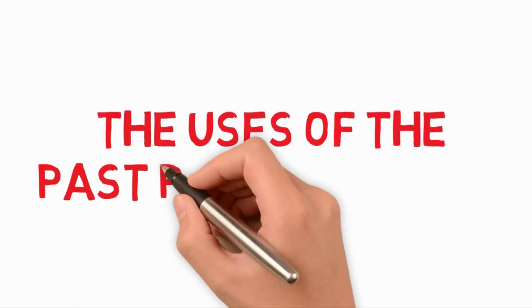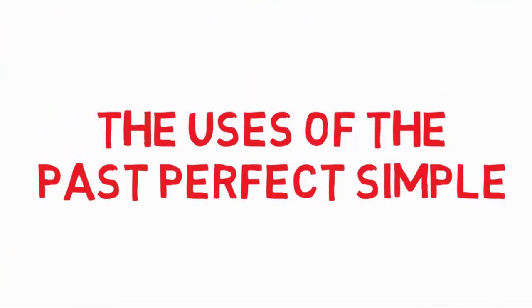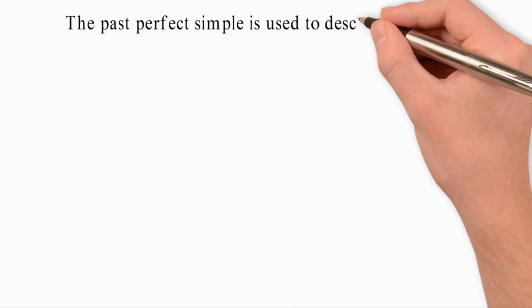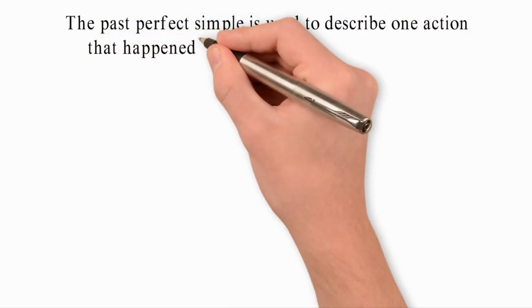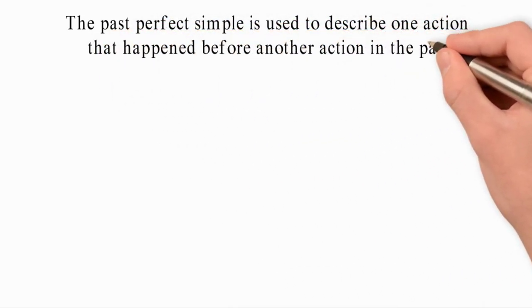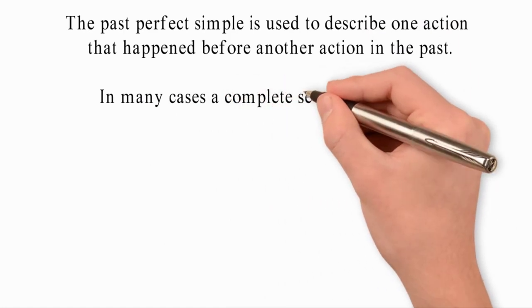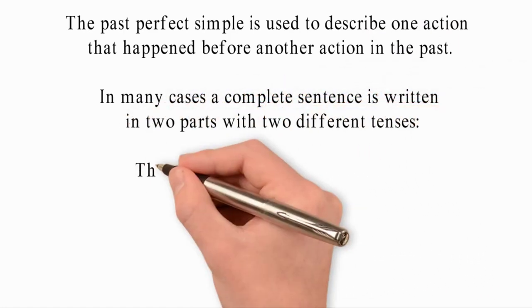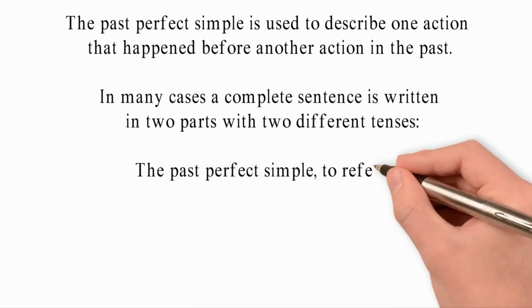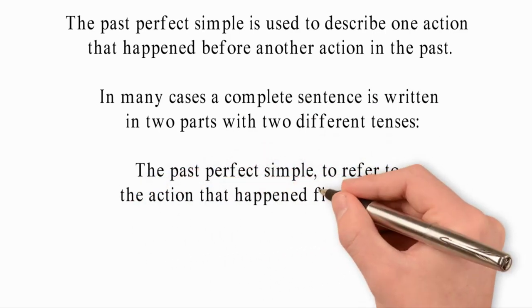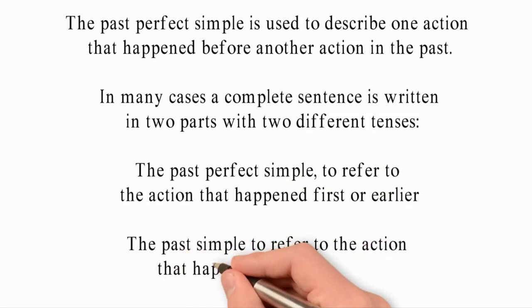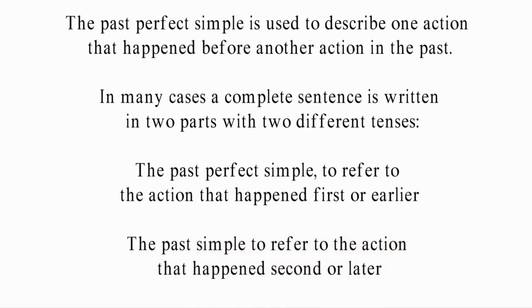The uses of the past perfect simple. The past perfect simple is used to describe one action that happened before another action in the past. In many cases, a complete sentence is written in two parts with two different tenses: the past perfect simple to refer to the action that happened first or earlier, and the simple past to refer to the action that happened second or later.